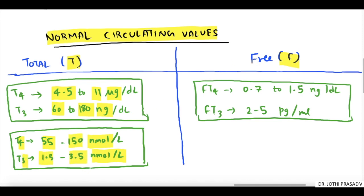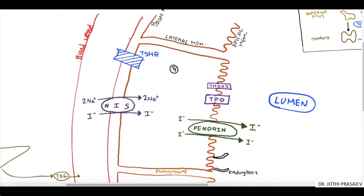Coming to free T4 and T3: FT4 is 0.7 to 1.5 ng per deciliter. FT3 is 2 to 5 picogram per milliliter. As you all know, the functional unit of thyroid gland is a thyroid follicle.